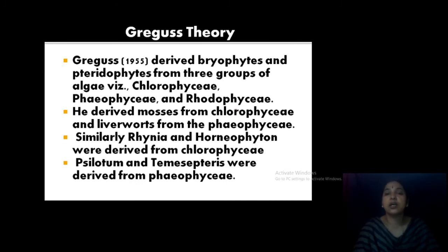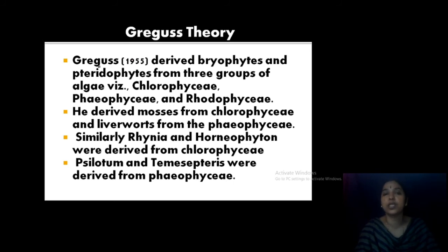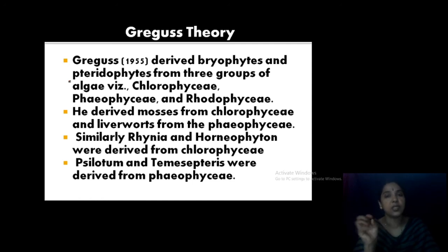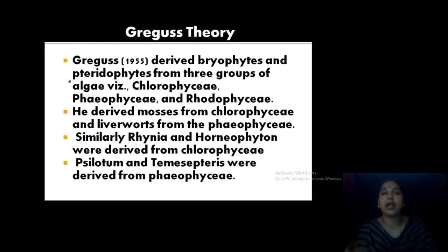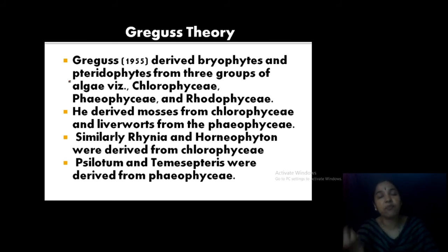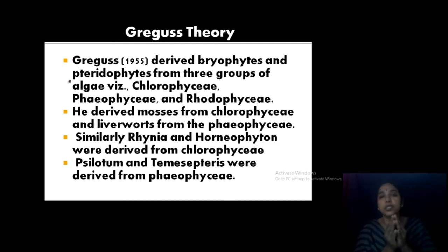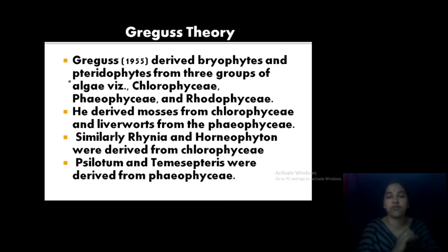According to Grigas, bryophytes and pteridophytes derived from three groups of algae: Chlorophyta, Phaeophyceae, and Rhodophyta. Mosses evolved from Chlorophyta, liverworts from Phaeophyceae, and Rhynia and hornophytes — which are pteridophytes — developed from Chlorophytes, while Psilotum is derived from Phaeophyceae. So according to Grigas, bryophytes and pteridophytes developed from groups of marine or freshwater algae, mainly Chlorophytes, Phaeophyceae, and Rhodophytes.